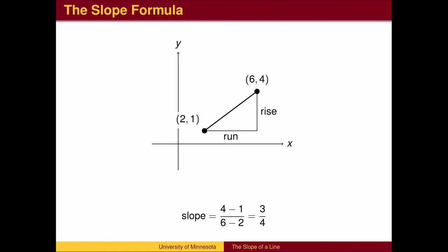Given two points, we can find the slope between the points by subtracting coordinates. The vertical change, the change in y, also known as the rise, is placed in the numerator, and the horizontal change, the change in x, or run, is placed in the denominator.